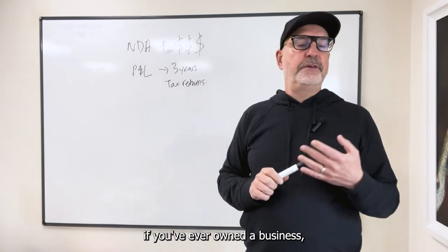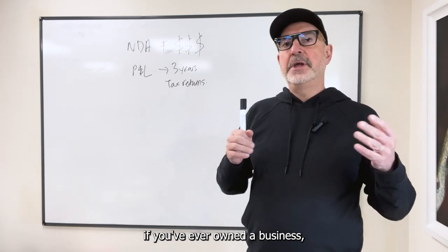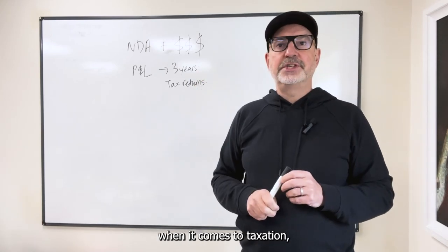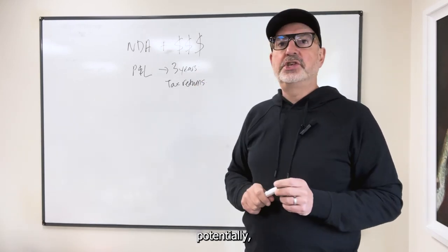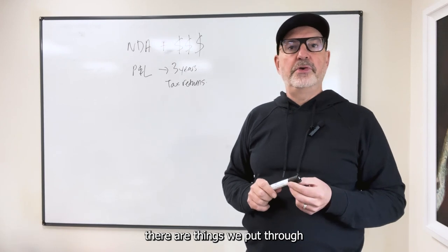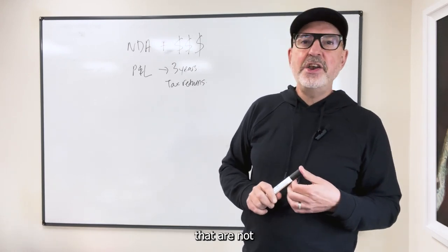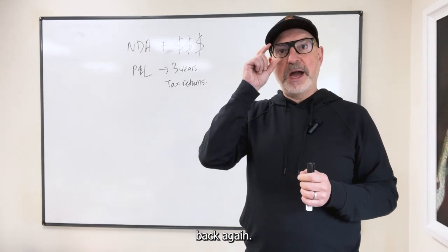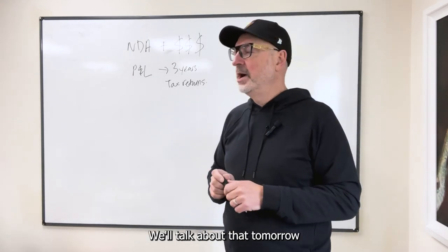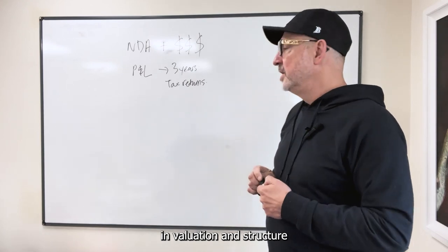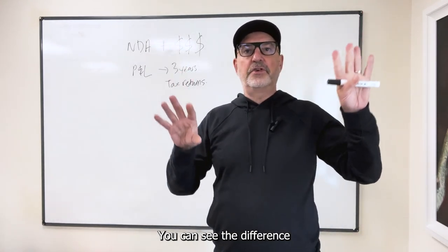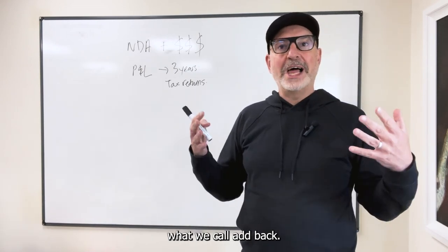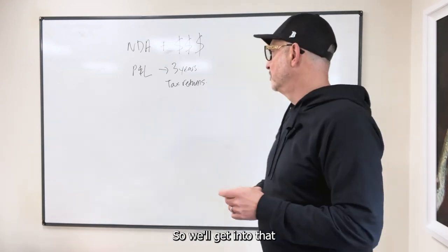Because as you can imagine, if you've ever owned a business, let's just say to be very efficient when it comes to taxation, potentially there are things we put through our business as expenses that are not really expenses, and those need to get added back. Again, we'll talk about that tomorrow in valuation and structure. So if you get the tax returns, you can see the difference between the two. And then those tend to be what we call add backs, and we'll get into that tomorrow as well.